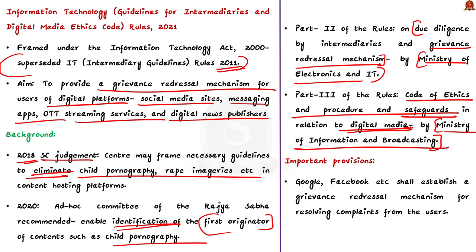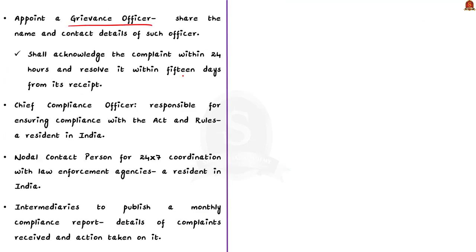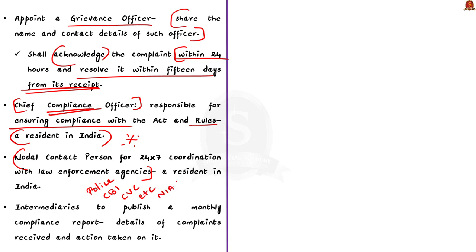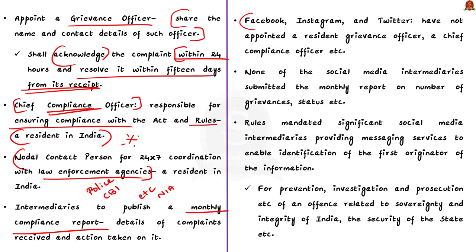Once these rules come into effect, platforms like Google, Facebook and other intermediaries will have to establish a grievance redressal mechanism for resolving complaints. They shall appoint a grievance officer to deal with such complaints and share the officer's name and contact details. The grievance officer shall acknowledge the complaint within 24 hours and resolve it within 15 days from its receipt. They shall also appoint a Chief Compliance Officer responsible for ensuring compliance with the Act and Rules, who shall be a resident in India. None of the three significant social media intermediaries — Facebook, Instagram and Twitter — had appointed these officers as per government norms.